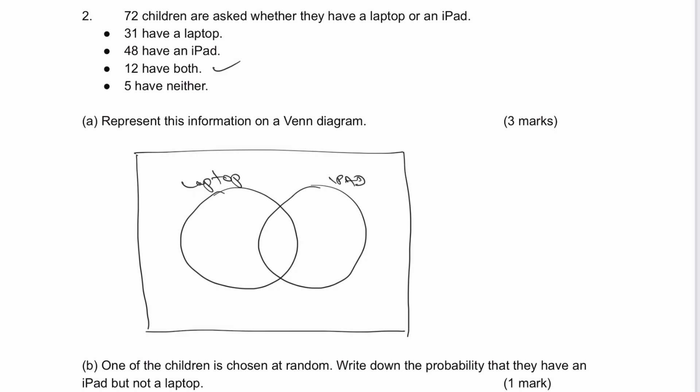The first one says 12 have both, so we can put that in the middle. Now it says that 48 have an iPad, so the difference between 12 and 48 is going to be 36. So basically, 36 only have an iPad,